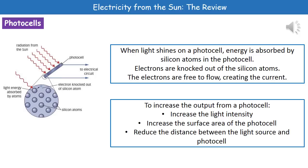To increase the output from our photocell we can do one of three things. We can increase the light intensity, or we can increase the surface area of the photocell.